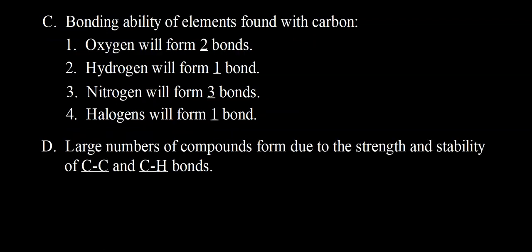Now let's look at other atoms bonded to carbon in organic molecules. Oxygen can form two bonds — it has six valence electrons and achieves stability by forming two bonds, either two single bonds or one double bond. Hydrogen has one valence electron and can form only one covalent bond.